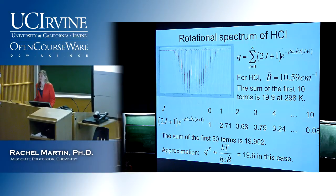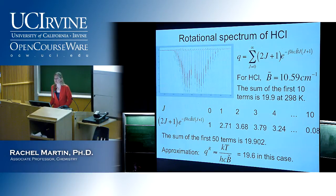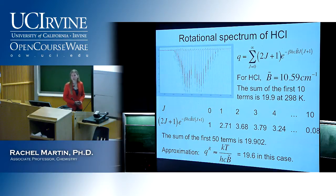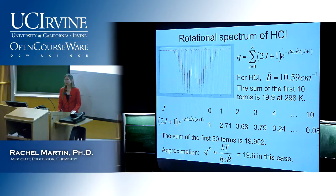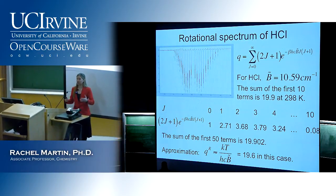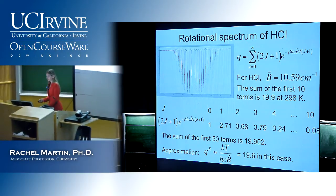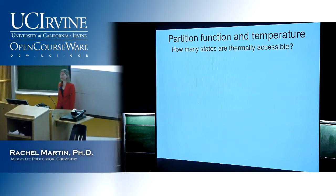Student question: on the table, for J=3, is that the population? It's related to the population — it's essentially a relative population relative to how many are in the ground state, since E_i = e^{-β ε_i} in the denominator. To get the actual population of the state, you have to divide by the partition function. What this is telling us is how many states are thermally accessible at a particular temperature.